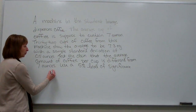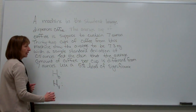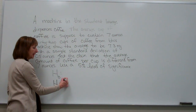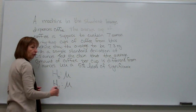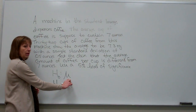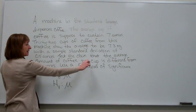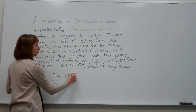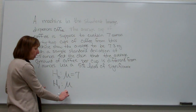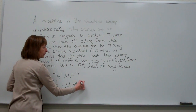The first component to write down is our null and alternate hypothesis. The parameter we're talking about is the average, and the symbol for the population mean is mu. In the null, I set mu equal to whatever value we're testing against, which is 7. My alternate hypothesis, since it says 'different from,' is that mu is not equal to 7.